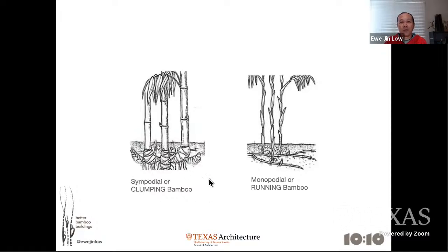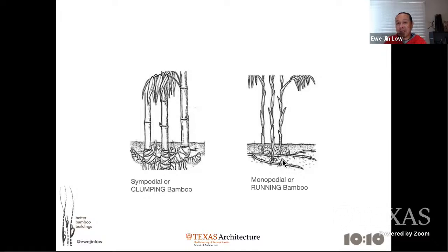Sympodial bamboo means bamboo that grows in a group — it clumps up. Running bamboo is monopodial bamboo. Running bamboo has caused, in the past, a lot of neighbourhood wars — even people shooting at each other because the bamboo becomes a pest. It sort of runs under your fence and into your neighbours', even through concrete pavement and causes cracks. Clumping bamboo keeps together in groups.